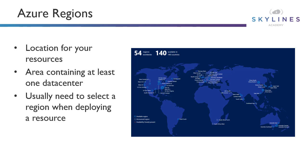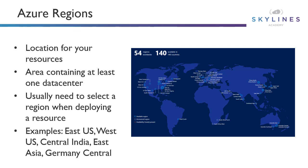You usually need to select a region when deploying your resource. You can't just deploy the resource and then choose a region — you have to select the region as part of the deployment. Good examples of regions are East US, East US 2, West US, Central India, East Asia, Germany Central, and so on.